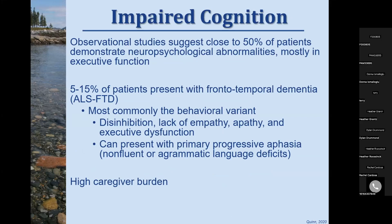Regarding impaired cognition, 50% of ALS patients may have loss of executive function. Frontotemporal dementia affects 5-15% of ALS patients, with some studies as high as 30%. It's usually the behavioral variant featuring disinhibition, lack of empathy, apathy, and loss of executive function — and in some cases FTD manifests well before ALS. FTD can also present as primary progressive aphasia where patients lose their ability to speak expressively or receptively. This significantly adds to caregiver burden.